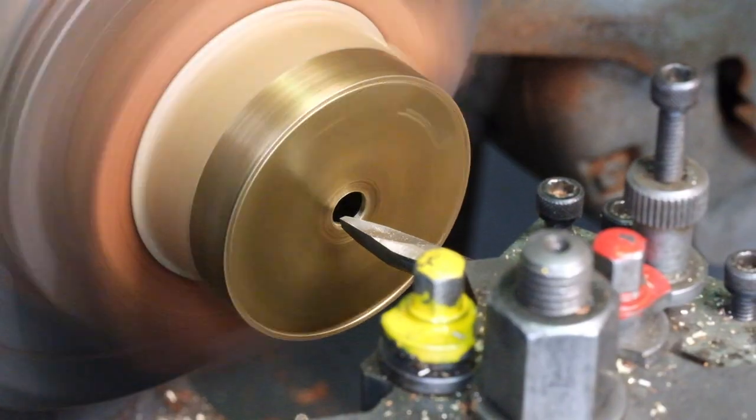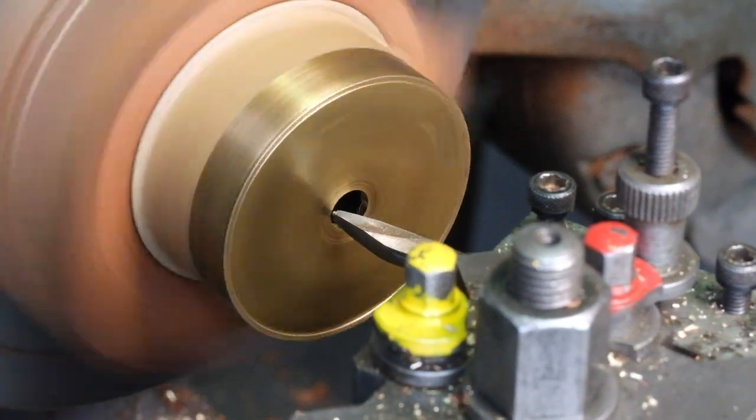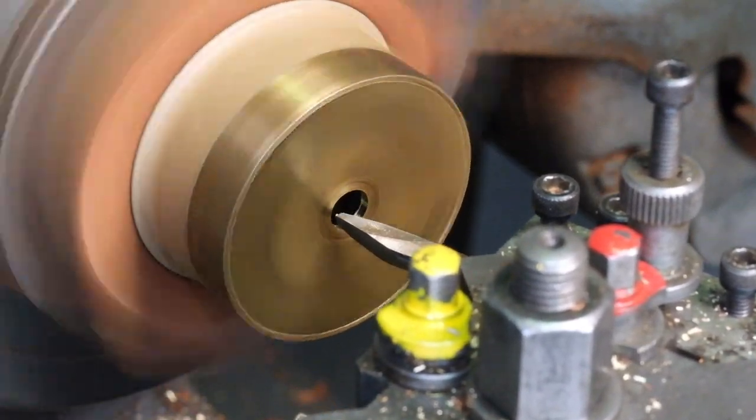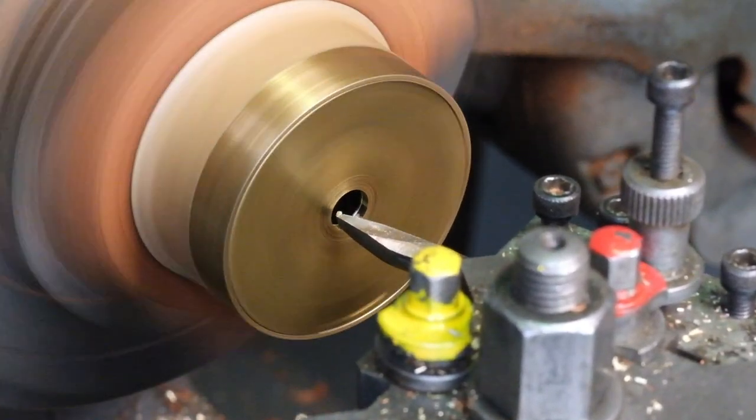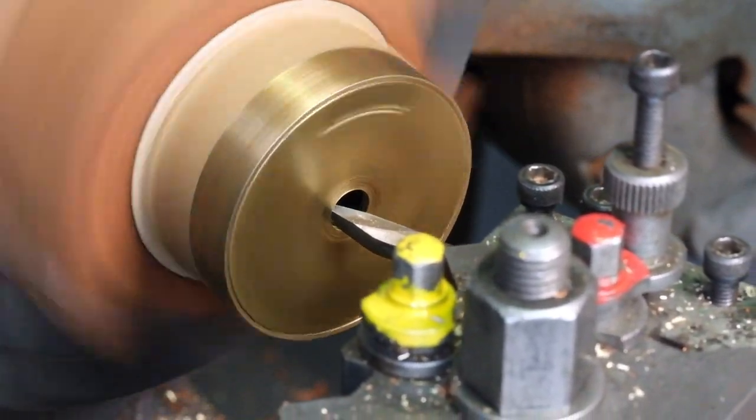And it's exactly the same process for the barrel cap. The barrel cap has to be machined, or particularly the final boring, when it's on the barrel body. Otherwise you've got no guarantee that it's going to be concentric or axial with the arbor.